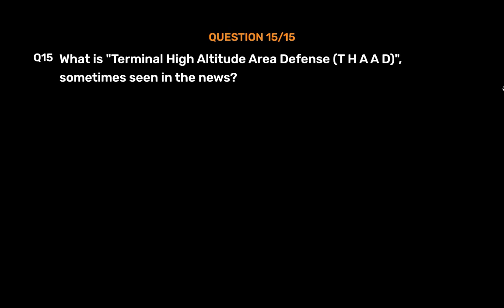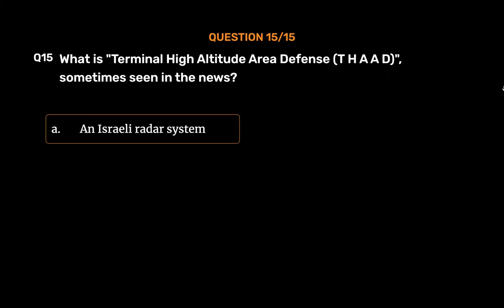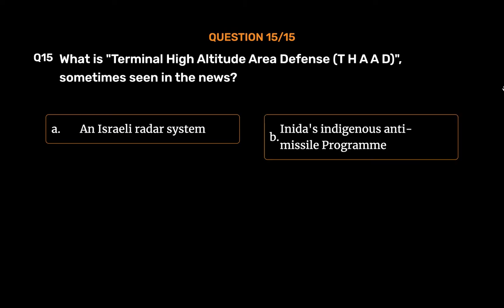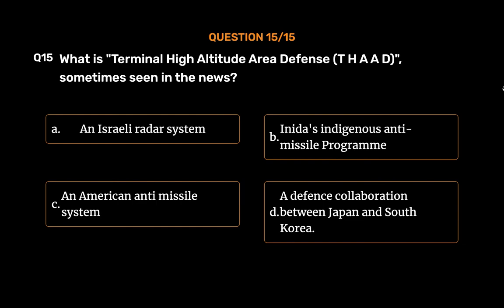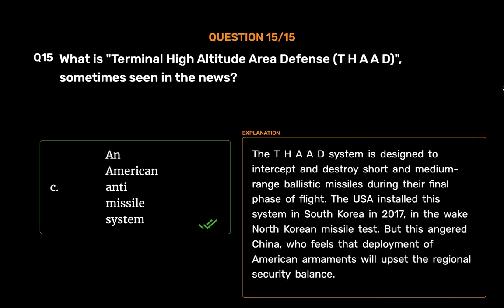Question No. 15. What is Terminal High Altitude Area Defense (THAAD), sometimes seen in the news? Option A: An Israeli radar system. Option B: India's indigenous anti-missile program. Option C: An American anti-missile system. Option D: A defense collaboration between Japan and South Korea. The correct answer is Option C: An American anti-missile system. The THAAD system is designed to intercept and destroy short- and medium-range ballistic missiles during their final phase of flight. The USA installed this system in South Korea in 2017, in the wake of North Korean missile tests, but this angered China, who feels that deployment of American armaments will upset the regional security balance.